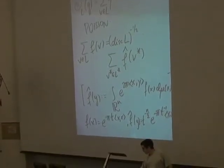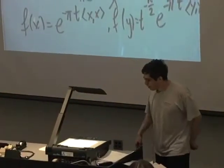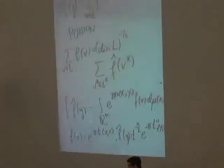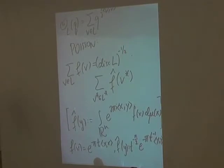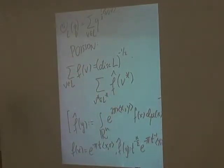You do the usual sanity check that applying this twice comes back where you started: the two powers of t cancel, t^(−n/2) × (1/t)^(−n/2) = 1. And so that means the value of the theta function of L at q, if q = e^(−2πt), is going to equal the value of the theta function for the dual lattice evaluated at the complementary choice of q.